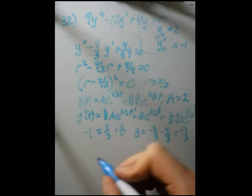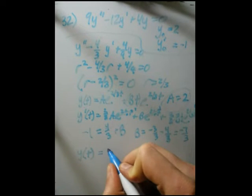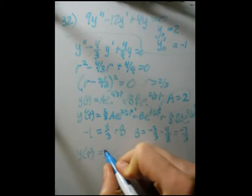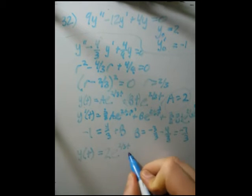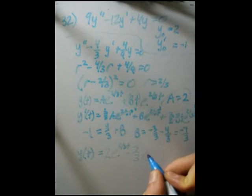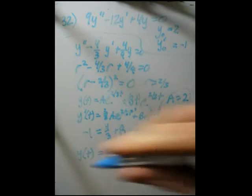So our final solution, plugging these in for our initial one, is equal to 2 e to the 2 thirds t. And now, minus 7 thirds, which is b, times t, times e to the 2 thirds t. And that is our final solution with the boundary conditions. And my marker is going to die.